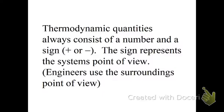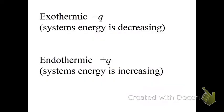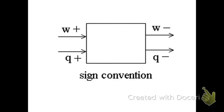I'm going through this fast because it's a review. Am I going too fast? Okay, good. Thermodynamic quantities always consist of a number and a sign, positive or negative. The sign represents the system's point of view. Engineers use the surrounding point of view. But we are not engineers. We are chemists in here. Chemical engineers use all of us.